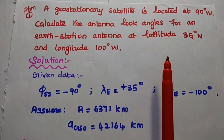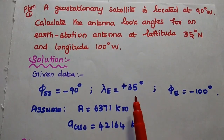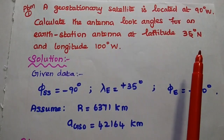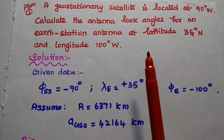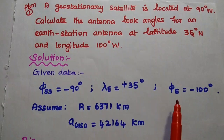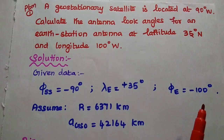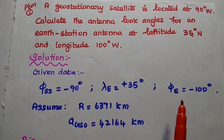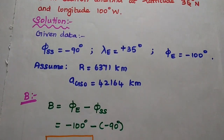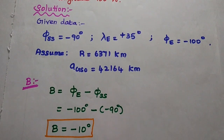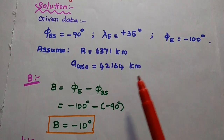We also assume the mean radius of the earth R equals 6,371 km and the mean radius of the geostationary orbit A_GSO equals 42,164 km. Now, applying the first formula: capital B equals phi_e minus phi_ss equals −100° minus (−90°) equals −10°.